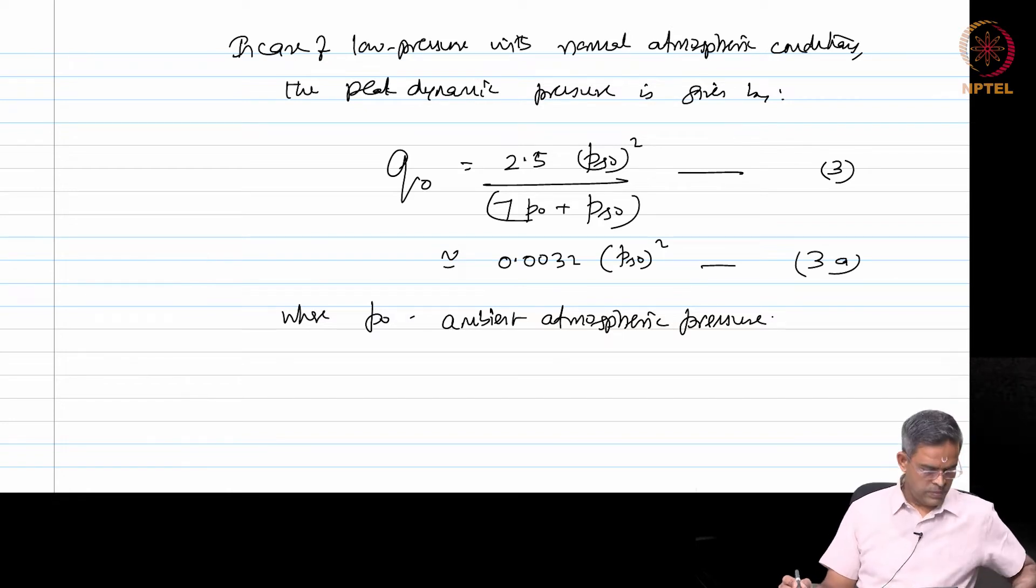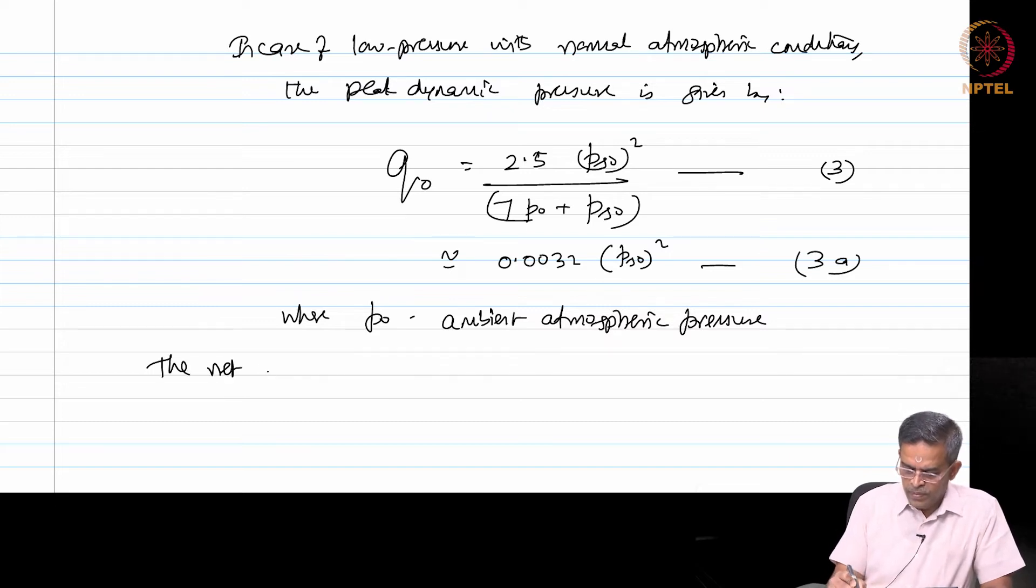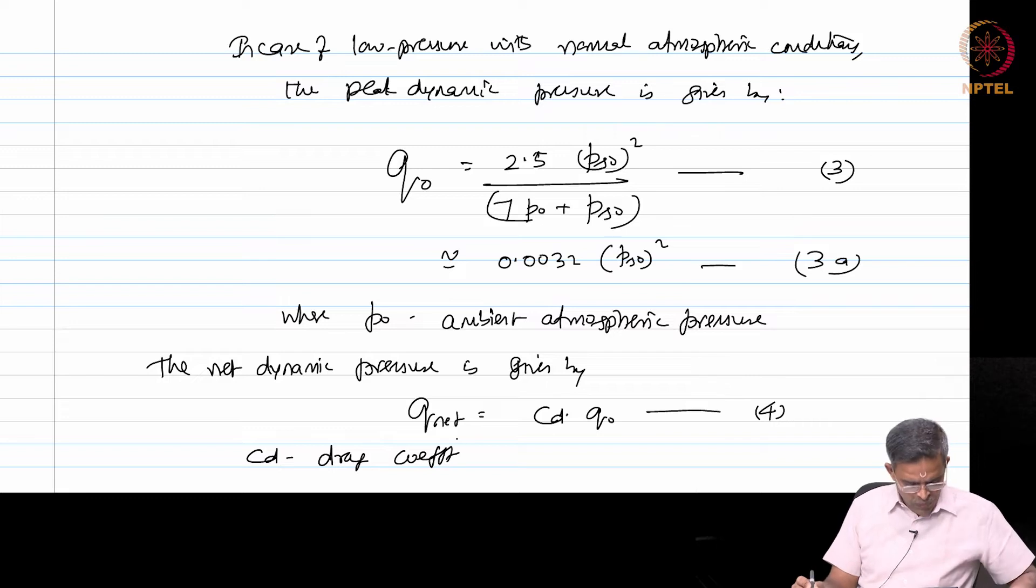Where P0 is called ambient atmospheric pressure. Having said this, the net dynamic pressure Q naught is therefore given by CD into Q naught, where CD is called the drag coefficient, which is influenced by the wind pressure present around the building.